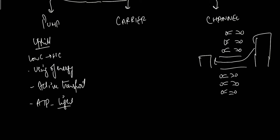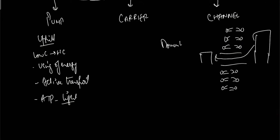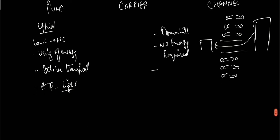Channels can be of two types: gated channels and pores. Gated channels have a gate that only opens when an impulse signals them to open, and otherwise remain completely closed. Pores, on the other hand, are always open and always allow substances to move from high concentration to low concentration. This is basically what a channel is — a passive, downhill transport mechanism requiring no energy.